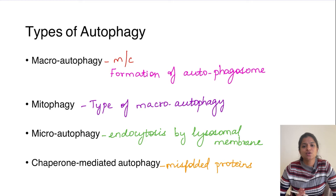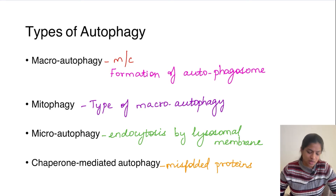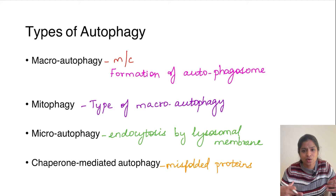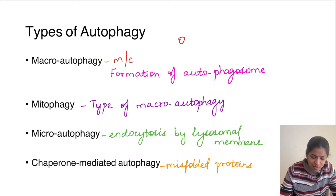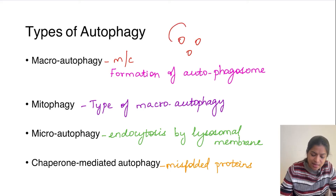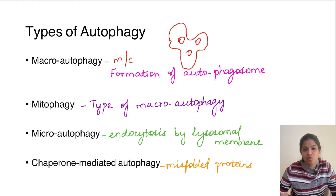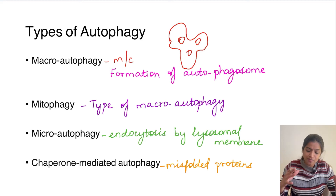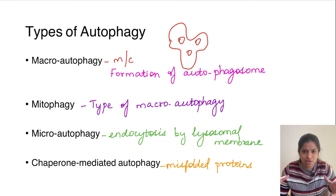Coming to the types of autophagy, we have four main types. The first is macroautophagy, which is the most common type. Here, organelles that have to undergo degradation are targeted — for example, mitochondria, endoplasmic reticulum, Golgi apparatus. A membrane autophagosome is formed around these organelles, targeting them for degradation. The formation of an autophagosome is characteristic of macroautophagy.